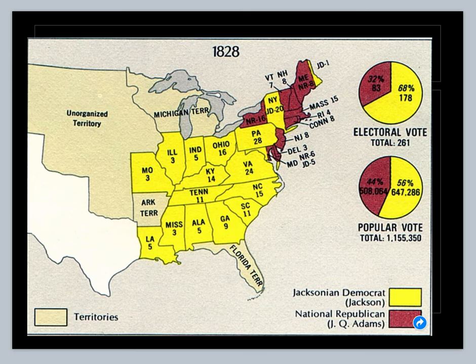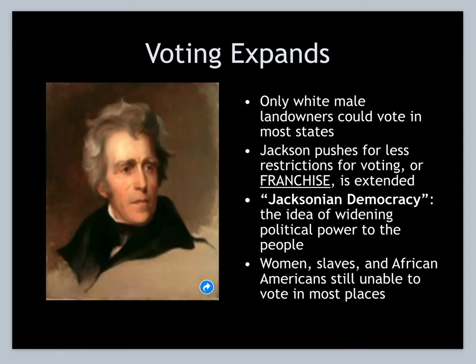There's no doubt left this time, and there's no third candidate stealing votes. That's the importance of third parties — they can steal votes, territory, and ultimately electoral college votes. Popular vote really doesn't matter in this sense. Voting expands: Jackson wants to expand voting beyond wealthy white male landowners to the common man, not just the wealthy rich elite. It's called Jacksonian Democracy — the idea of widening political power to the people.